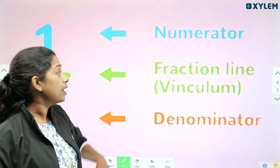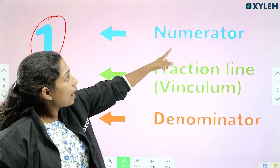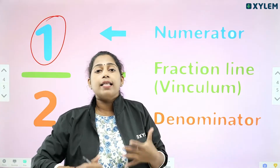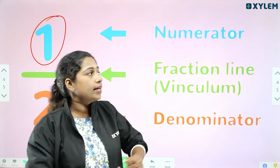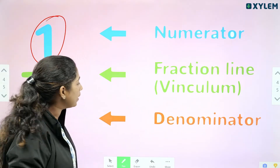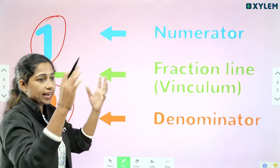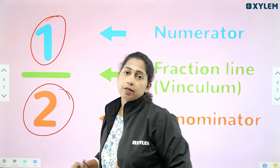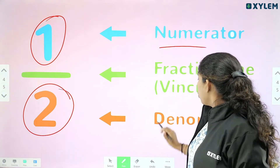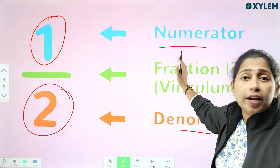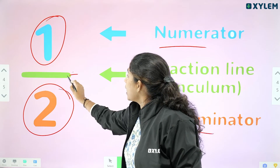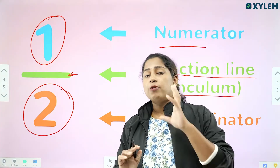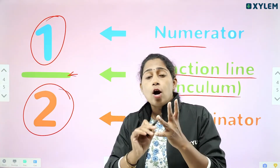Parts of a Fraction. A fraction has three parts. The top part is the Numerator — the part that you have. The bottom part is the Denominator. A fraction has a numerator, a denominator, and a line between them. We call this line the fraction line, also known as the vinculum. A fraction is made of a numerator and denominator separated by a vinculum.